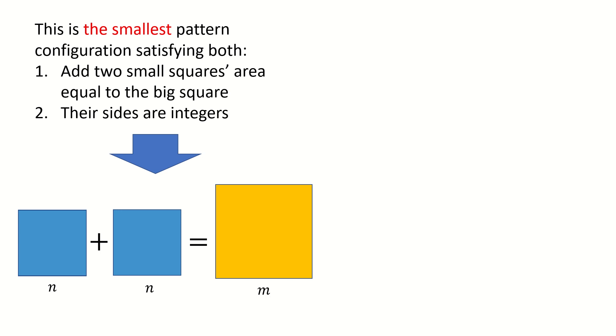First is that two small squares' area equals the big square. The second condition is their sizes are integers. So let's see what happens if we fill these two blue squares into this yellow square.